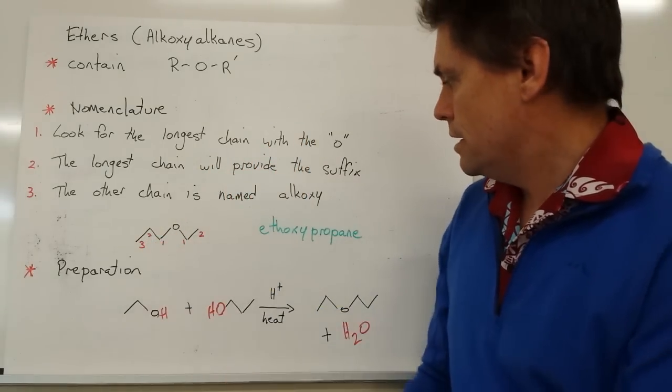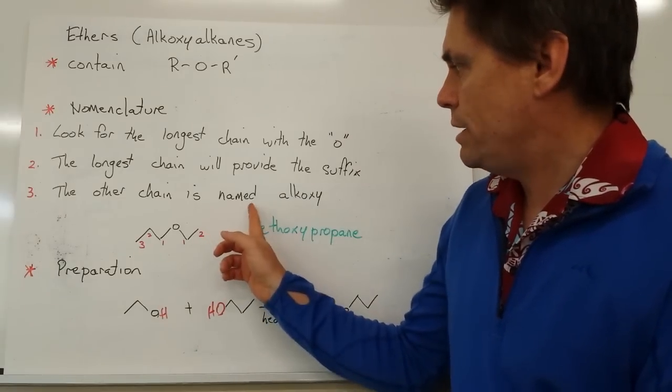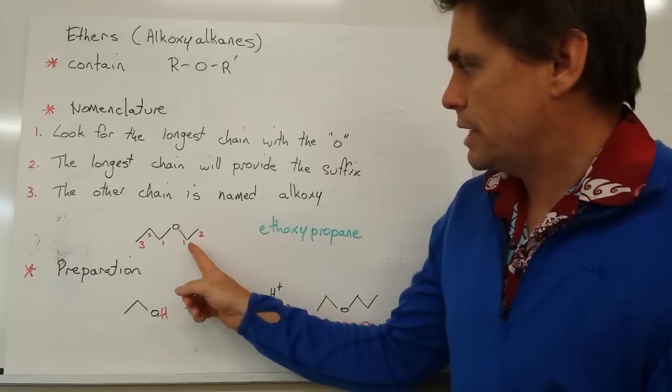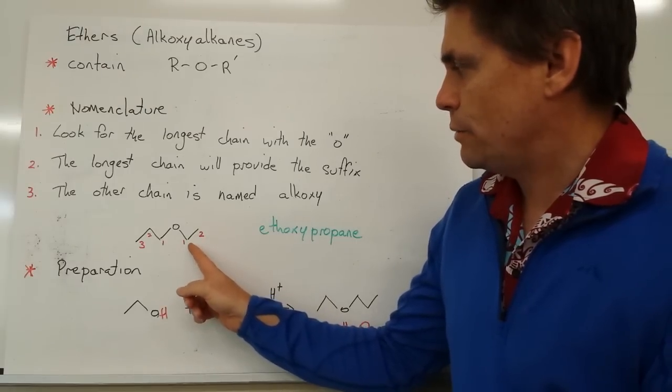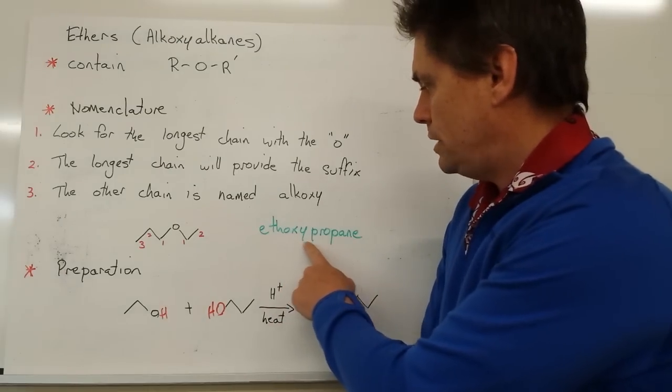we've got three carbons, so it's going to be propane. The other chain we name with an alcoxy system. In this case we've got an ethane, so we make it ethoxy. Our full molecule will be called ethoxypropane.